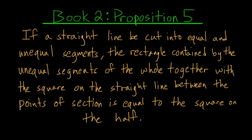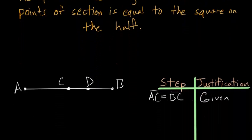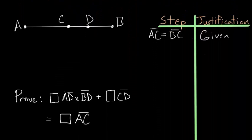For the fifth proposition of Book 2 of Euclid's Elements: if a straight line be cut into equal and unequal segments, the rectangle contained by the unequal segments of the whole together with the square on the straight line between the points of section is equal to the square on the half.